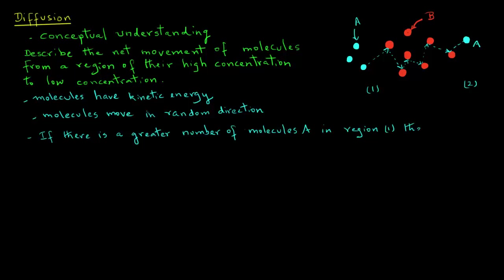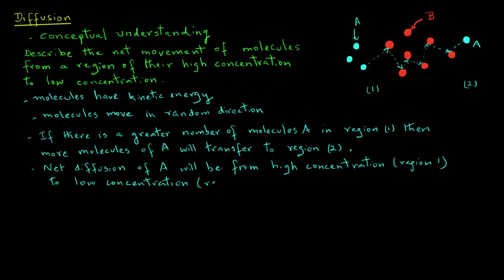then more molecules of A will transfer to region 2. So the net diffusion of A will be from high concentration region, that's region 1, to the low concentration region, region 2.